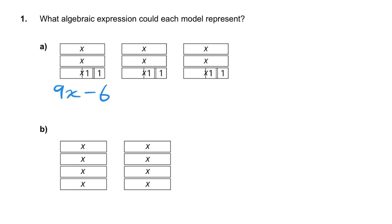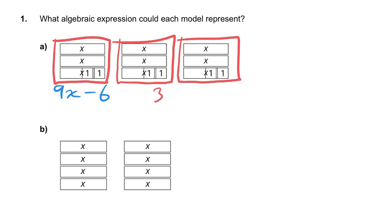Another way that we could see it is, we could see this as one group of 3x's, take away 2, and another group, and another group. So, since we have 3 identical groups, we could write this as 3 groups of 3x minus 2. So, two different ways of saying the same thing.